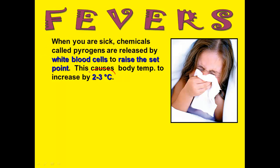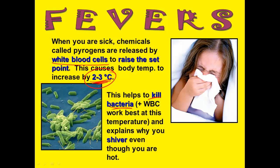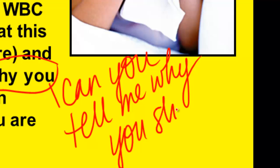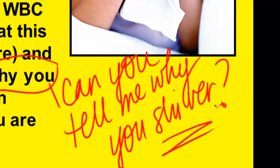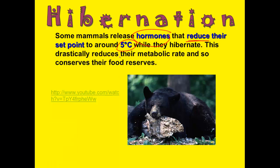Sometimes temperature doesn't stay within those parameters. One example is when you have a fever. When you're sick with a bacterial infection, your white blood cells release a chemical called a pyrogen to increase your body temperature by 2 to 3 degrees, which helps kill the bacteria — white blood cells work really well at a higher temperature. This also explains why we shiver when we have a fever — something to think about before class. Bears and other mammals that hibernate can release hormones that reduce their body temperature to around 5 degrees Celsius, drastically decreasing their metabolic rate to conserve energy.